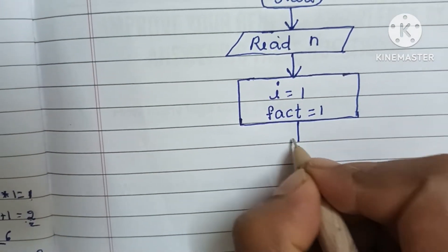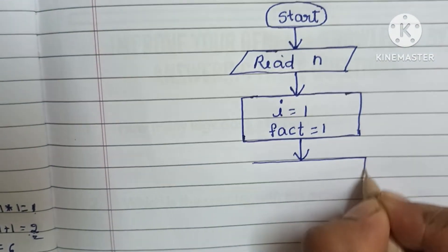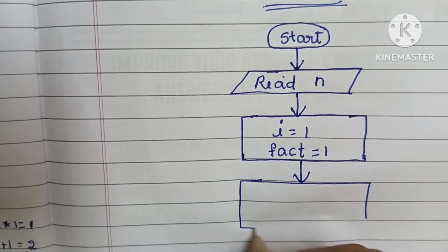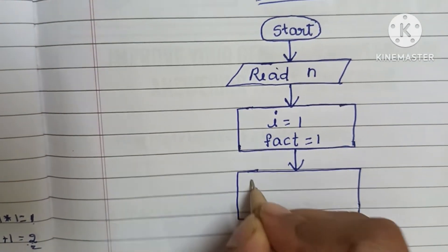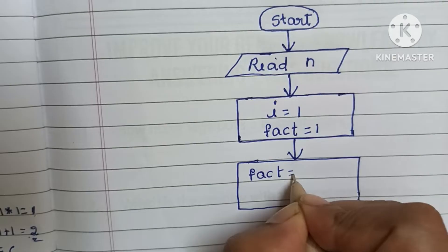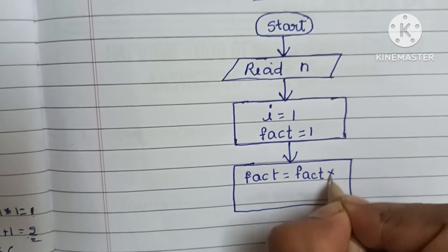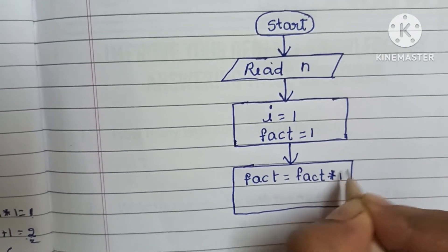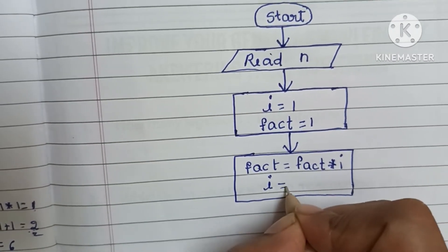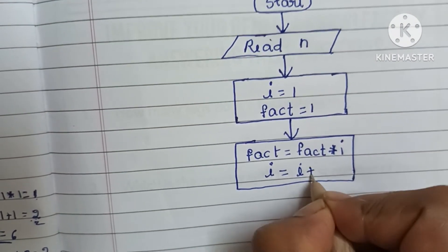Next, calculation is always done within a rectangular shape. Here we calculate fact equal to fact into i. Next we increase the value of i: i is equal to i plus 1.